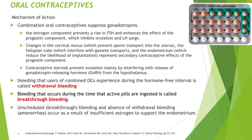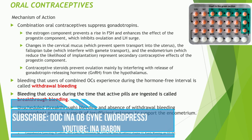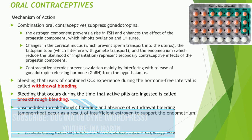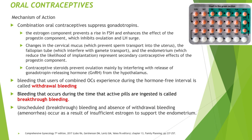The mechanism of action of OCs: combination oral contraceptives suppress the gonadotropins. The estrogen component prevents a rise in FSH and enhances the progestin component's effect, which inhibits ovulation and the LH surge. Secondary contraceptive effects of the progestin component include changes in the cervical mucus that prevent sperm transport into the uterus, effects on the fallopian tube that interfere with gamete transport, and changes in the endometrium that reduce the likelihood of implantation. Contraceptive steroids prevent ovulation mainly by interfering with the release of GnRH from the hypothalamus.